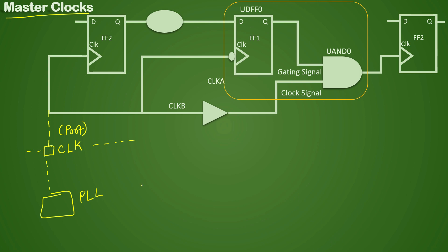Sometimes from the outside world, it could be a crystal oscillator from where the clock is coming. So the master clock source will send the clock with some latency; it will come to your clock port and inside the design — that is the master clock. The clock is defined in the constraint file, and the command is: create_clock, hyphen period, give the period value (five here), and then the port name or clock source name. That is how you define your master clock.